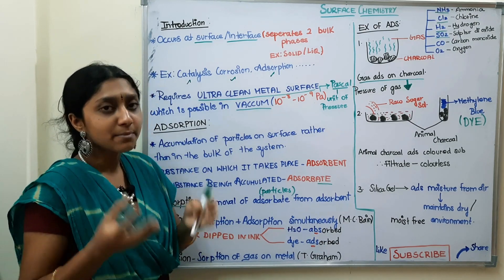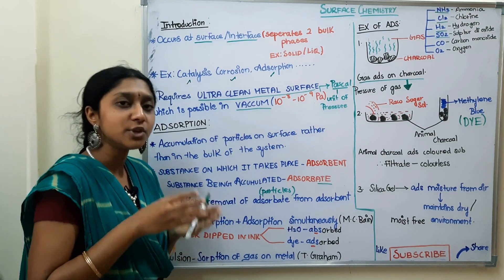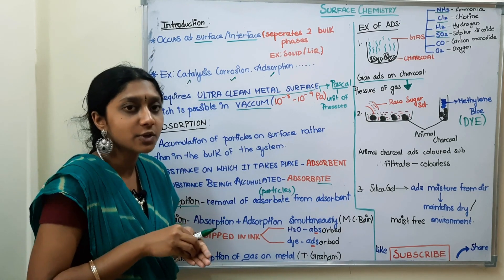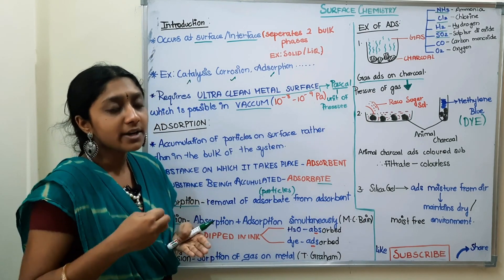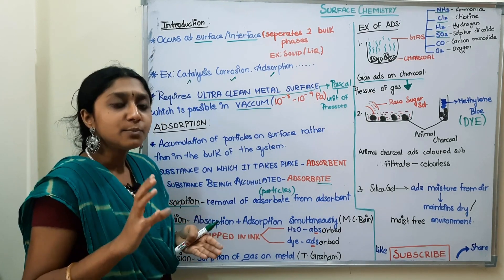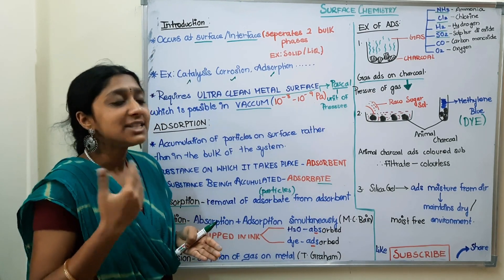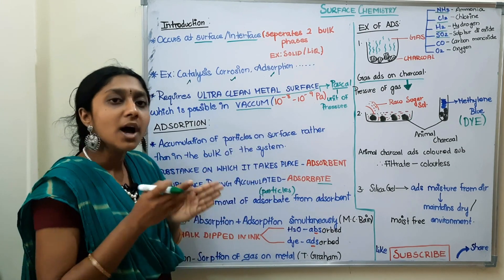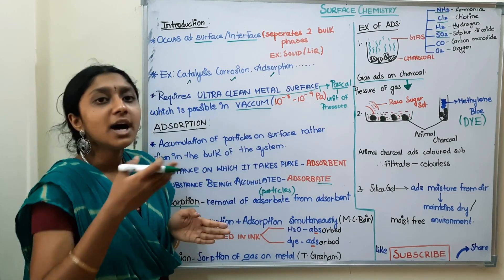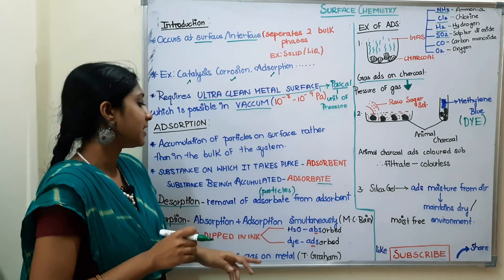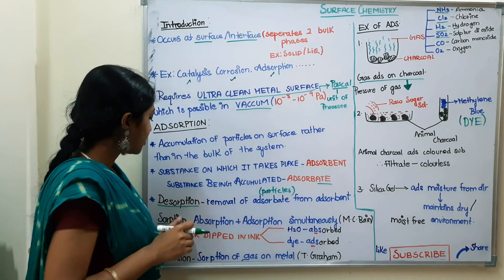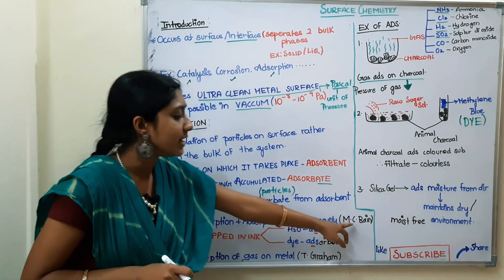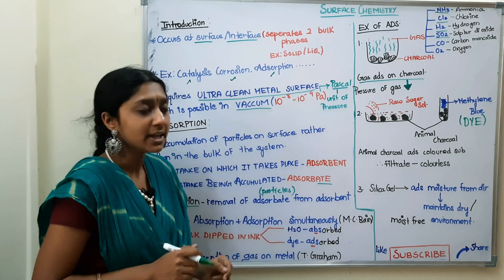Next is sorption. Sorption means adsorption and absorption occurring simultaneously at the same time. A simple example is a sponge absorbing water. Sorption involves both adsorption and absorption. This term was coined by MC Bain.